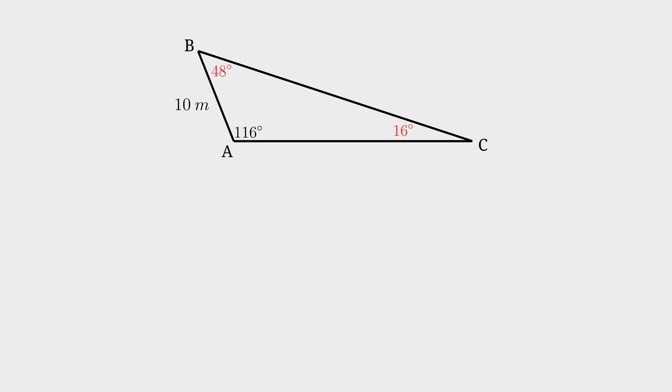We have to use the sine rule if we want to work out the length BC. We have the opposite angle, which is 116 degrees. And we also have the length AB and its opposite angle. The sine rule looks like this.